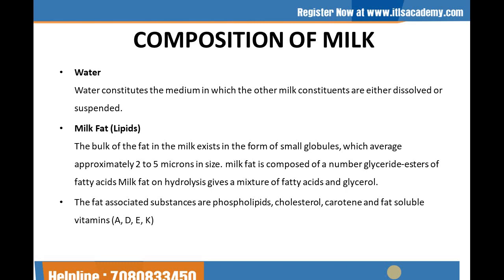The next one is milk fat. The bulk of the fat in milk exists in the form of small globules which average approximately 2 to 5 microns in size. This is an oil-in-water type emulsion. The surface of these fat globules is coated with an adsorbed layer of material, commonly known as the fat globule membrane, that contains phospholipids and proteins. This membrane prevents the fat globules from collapsing and separating from one another. Milk fat is composed of a number of glycerides of fatty acids. Milk fat on hydrolysis gives a mixture of fatty acids and glycerol. The fat-associated substances are phospholipids, cholesterol, carotene, and fat-soluble vitamins such as A, D, E, and K.